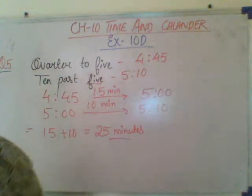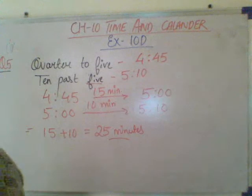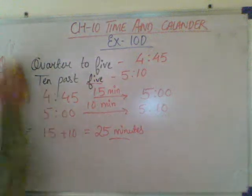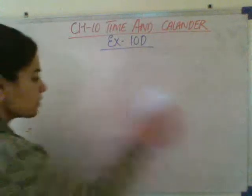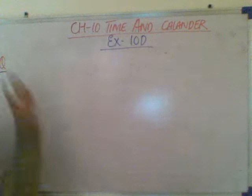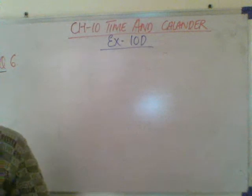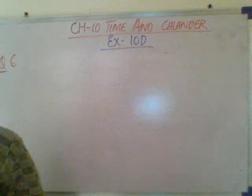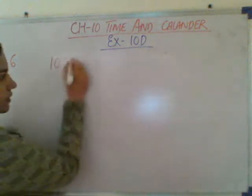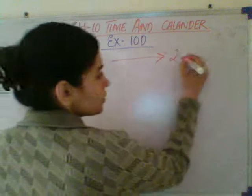Now let us do the next question, that is question number 6. Here the timing of the train is given in question number 6. A train leaves Delhi at 10 a.m. and reaches Jaipur at 2:20 p.m. How long is the journey? The timings given are 10 a.m. and 2:20 p.m.